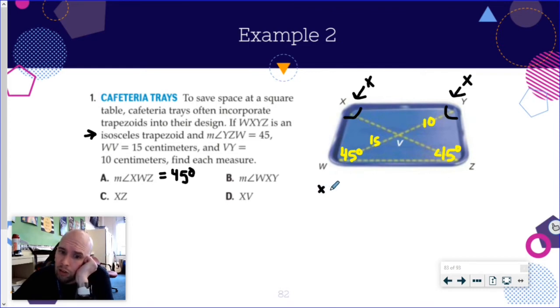So I have X plus X plus 45 plus 45, which I'm going to do a little bit of hand waving and say that that's 90. It's going to equal 360 degrees. Okay. I'm going to subtract 90 from both sides. It's going to be 270.